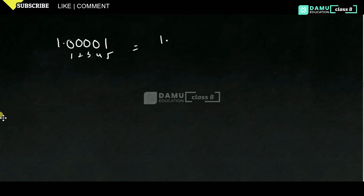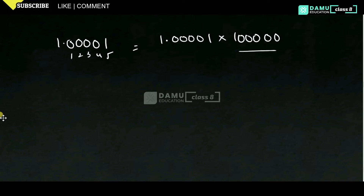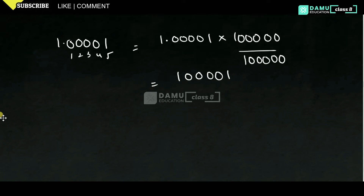That means 1.00001 — we need to multiply and divide with 1 lakh (100000), that is 5 zeros. If you multiply with 1 lakh here, then you will get 100001. So, what you will get is 1 lakh 1 by 1 lakh.